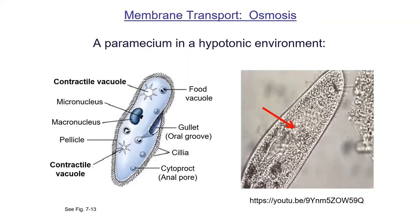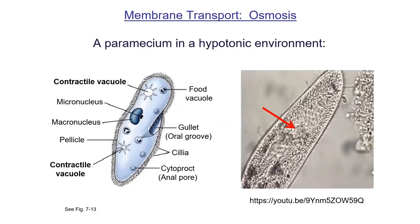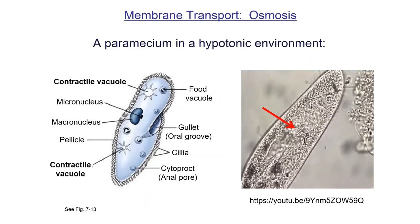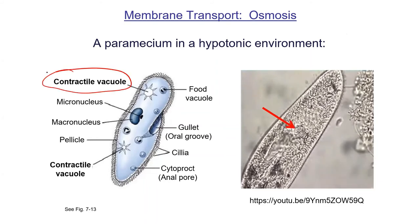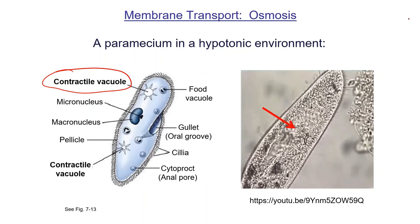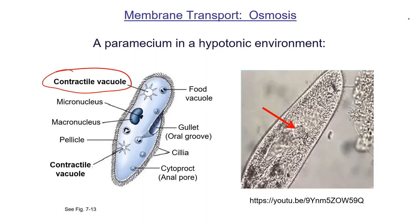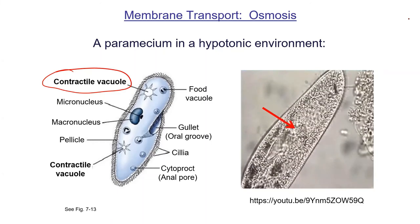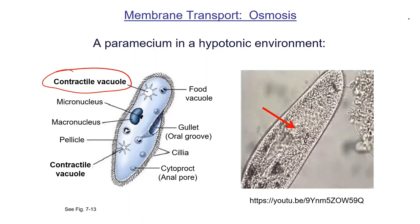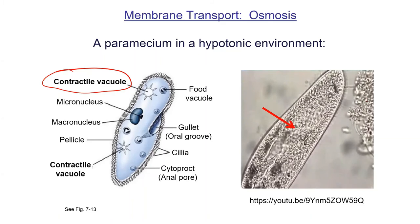Paramecia have no cell wall but live in ponds — hypotonic environments. So why don't they burst? They have a contractile vacuole, which actively pumps water out of the cell. In the video you can watch a large circle periodically contract and shrink — that's the contractile vacuole expelling water. The diagram shows this cell has two of them. There's also a YouTube link with nice footage of contractile vacuoles in action.